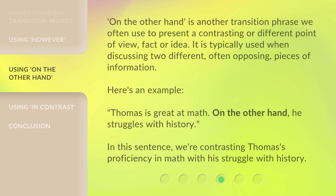On the other hand is another transition phrase we often use to present a contrasting or different point of view, fact, or idea. It is typically used when discussing two different, often opposing, pieces of information. Here's an example: Thomas is great at math. On the other hand, he struggles with history. In this sentence, we're contrasting Thomas's proficiency in math with his struggle with history.